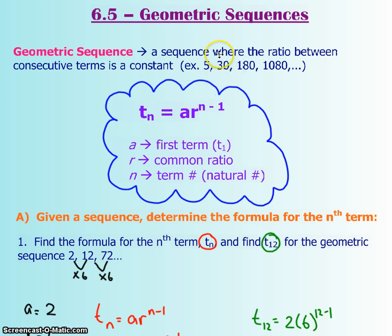So let's see if it works. The second term is 30. So when N is 2 for the second term, 2 minus 1 is 1. So R, your 6 because it was multiplying by 6s each time, is to the power of 1. And 6 to the power of 1 is just 6. That 6 times the 5 is going to give you 30. So it does work.